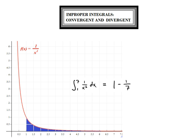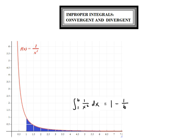This pattern will hold up no matter what the right bound is of the definite integral. If we integrate from 1 to b, the area under the graph — no matter what b is — is going to be 1 minus 1 over b. That's even if b is 1,000 or 10,000 or 10,000,000,000. The definite integral is going to be 1 minus 1 over whatever that number is.